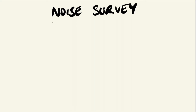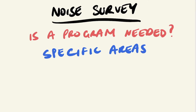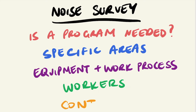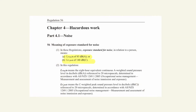Now that we've performed a noise survey and taken measurements of workplace noise levels, we are able to identify whether a hearing conservation program is needed — whether there are specific areas with excessive noise, particular equipment or work processes that are sources of excessive noise, whether workers might be exposed to unacceptable noise levels, and the appropriate type and level of controls needed. If a workplace is exposing workers to harmful noise, then a hearing conservation program is required. This should follow industry standards, which in Australia is the AS/NZS 1269.1 Occupational Noise Management — Measurements and Assessment of Noise Emission and Exposure — and comply with work health and safety regulations, which in Australia specify the workplace exposure standards for noise as shown below.